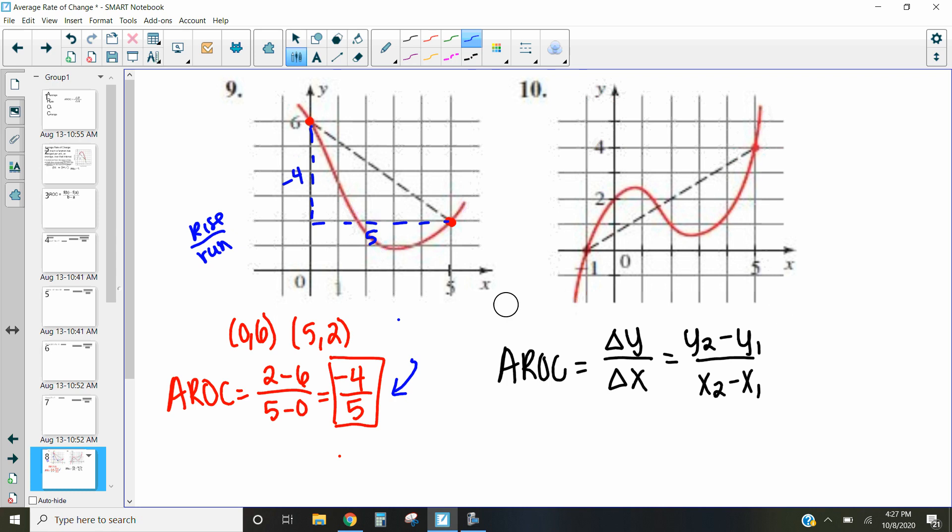So what I want you to do is I want you to find the average rate of change of this next problem, number 10. And we're looking at these two points, this one right here at (-1,0), and our other point up here at (5,4). So you can decide how we find the average rate of change.